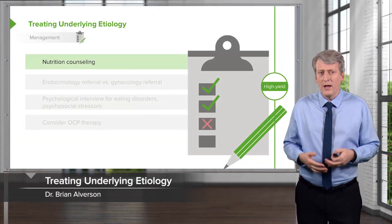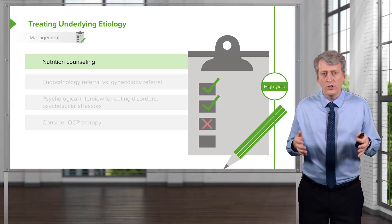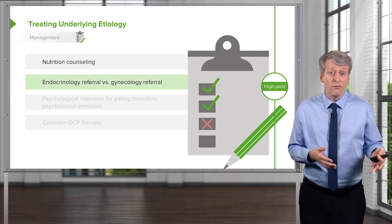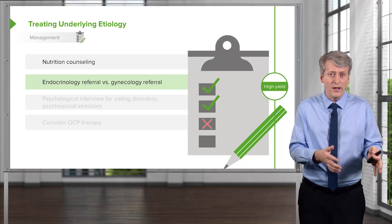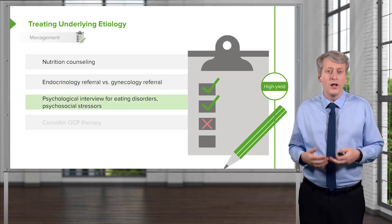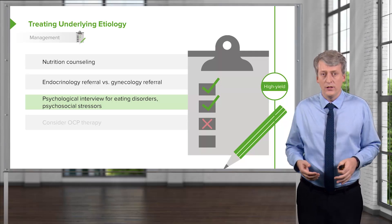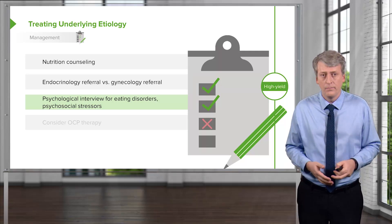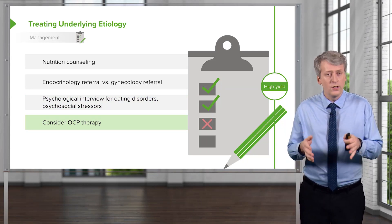When treating patients, we want to treat the underlying etiology of secondary amenorrhea. Consider nutrition counseling for eating disorders, endocrinology referral for HPO axis problems, or gynecologic referral for outflow tract obstruction. Consider psychological evaluation for eating disorders and psychosocial stressors — a common cause in adolescents, especially in more affluent settings. OCP therapy may be used to regulate the cycle in applicable individuals.